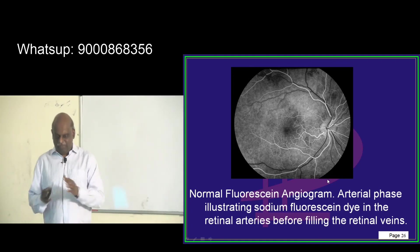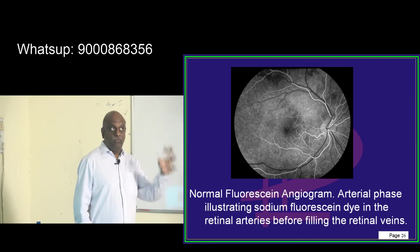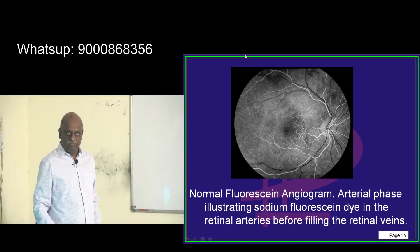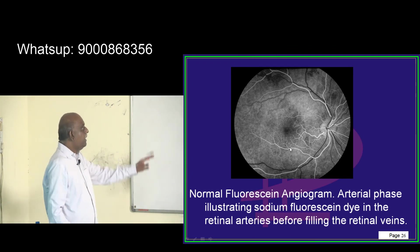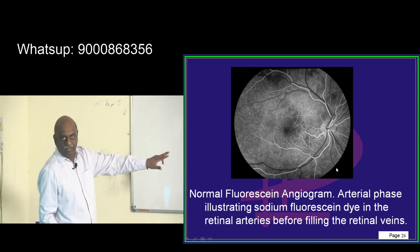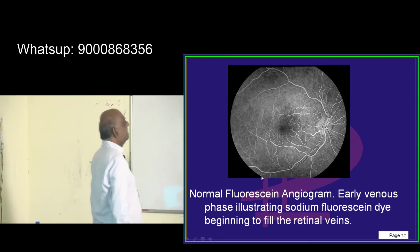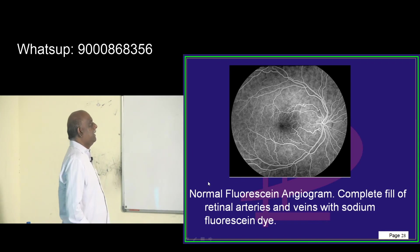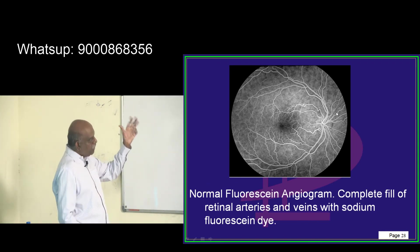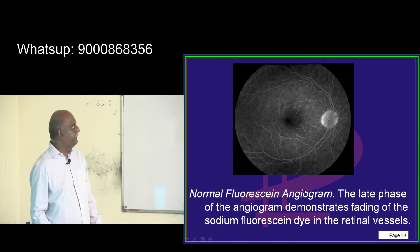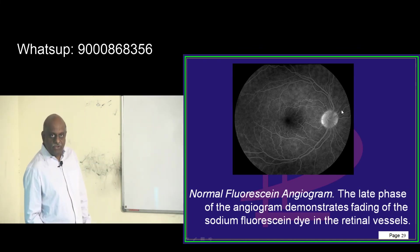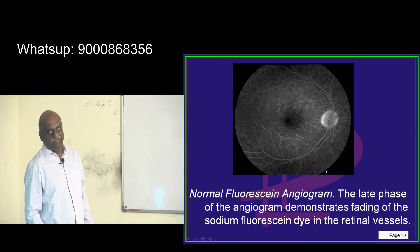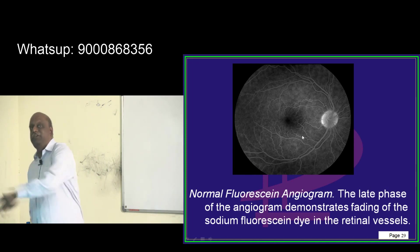This is a normal fluorescent angiogram. The phases are: first, the arterial phase, where after injection into the cubital vein the fluorescent fills the arteries but veins are not yet filled. Second, the early venous phase, where veins are also gradually filling. Third, complete filling of both arteries and veins with fluorescent dye. Fourth, the late phase, where there is fading of all the dye and only the optic disc remains visible.